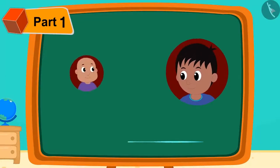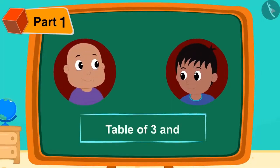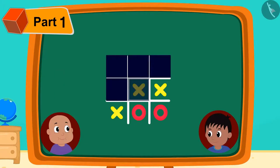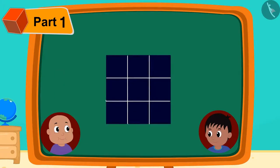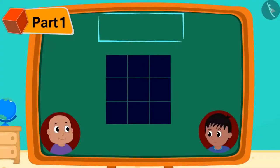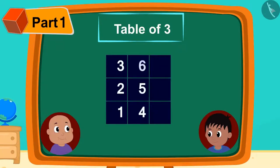Raju tells Bablu that he can also tell him an easy pattern to memorize the tables of 3 and 7. Kids, do you know the game of cross and 0? Raju first designed the game of cross and 0 in this way. He wrote the numbers from 1 to 9 in this pattern in the framework.